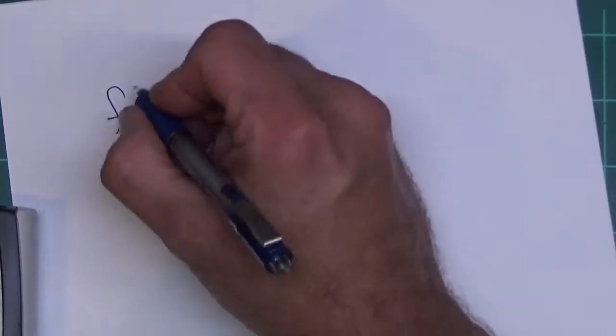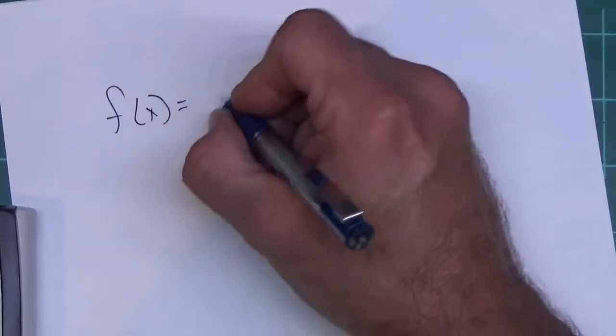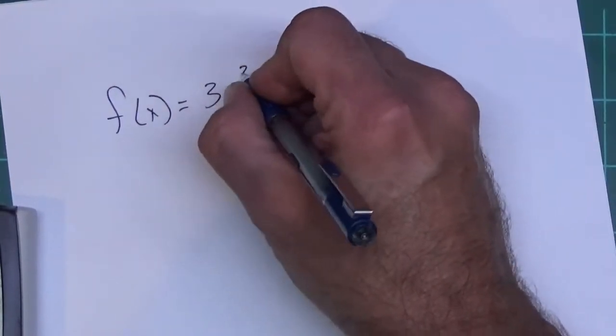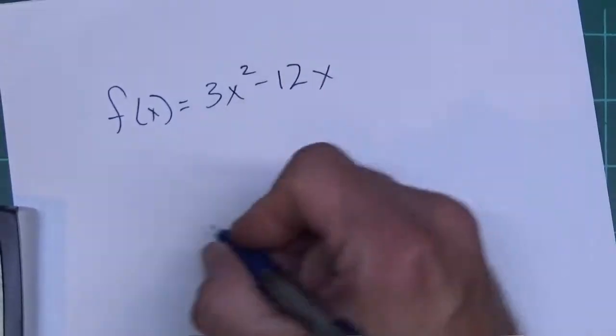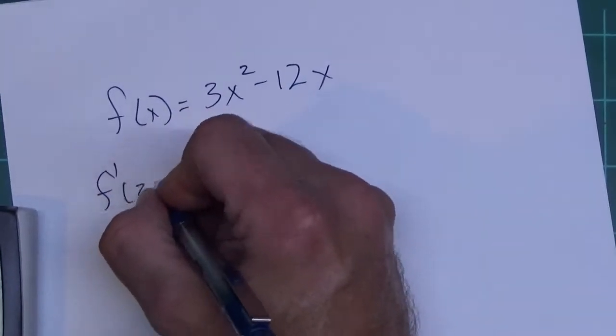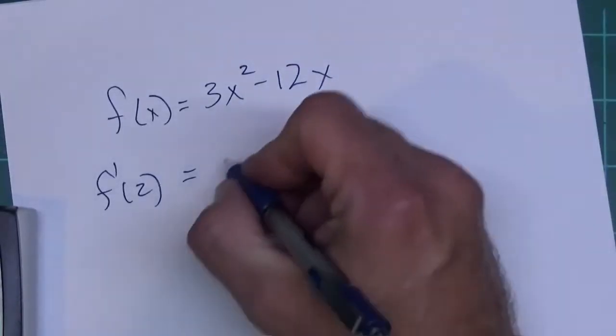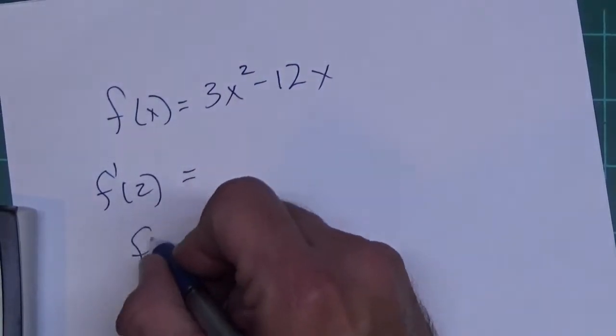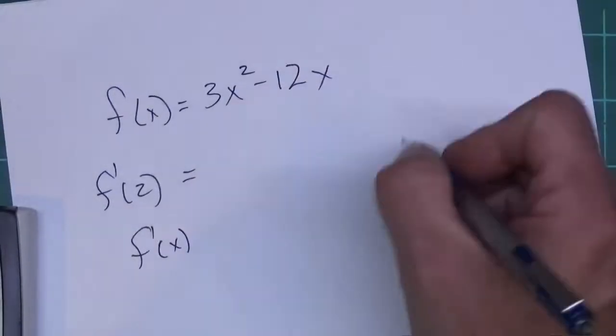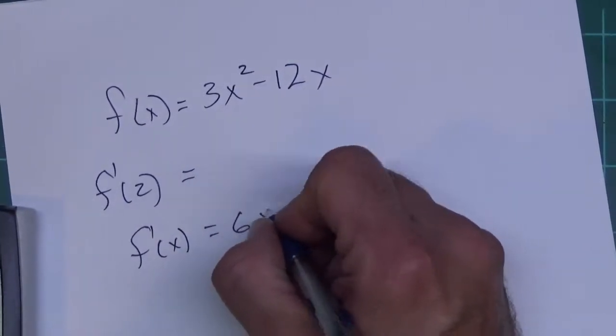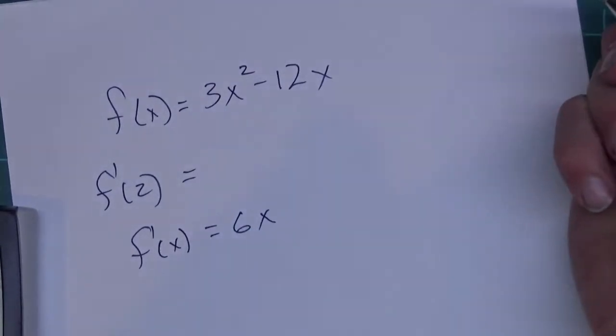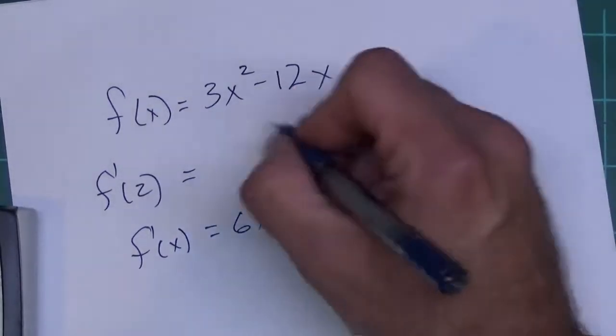Let's say my f(x), and I'm going to do something simple, is 3x² - 12x, and I want to know what f'(2) is. Now we could do that by hand - finding a derivative isn't that hard.